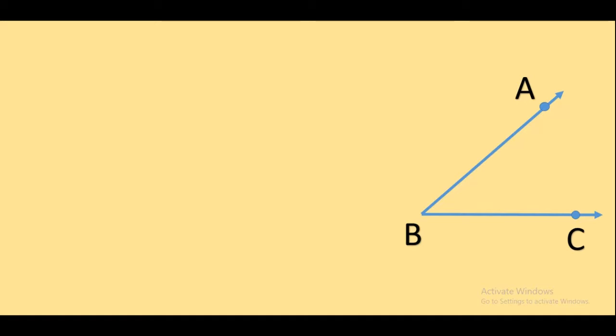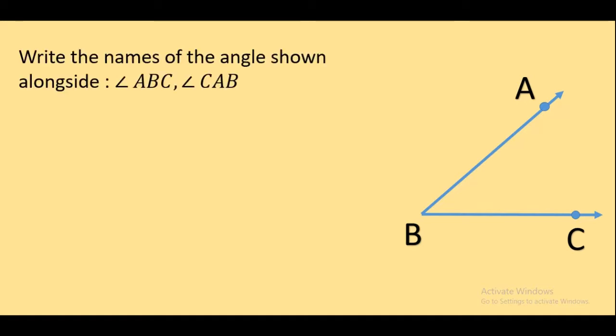So now let us see some basic things of this angle. Write the names of the angles shown alongside. You can write it two ways: angle ABC and angle CAB. Next, write the name of its vertex. Which is the vertex? B is the vertex.